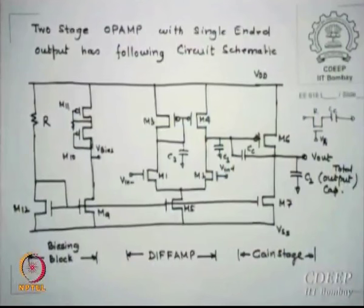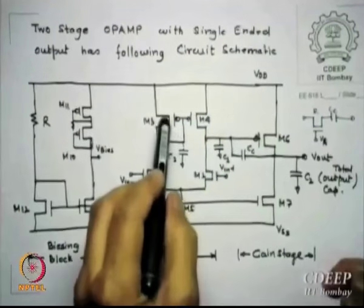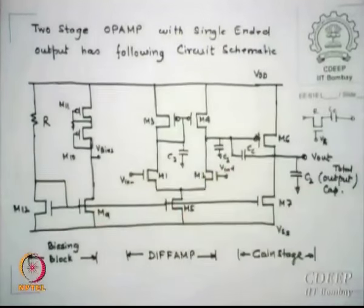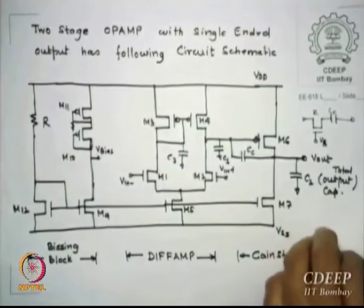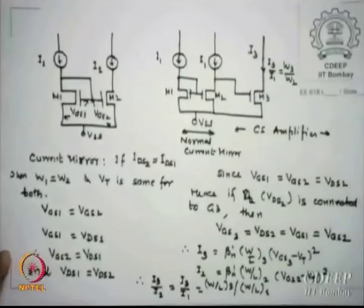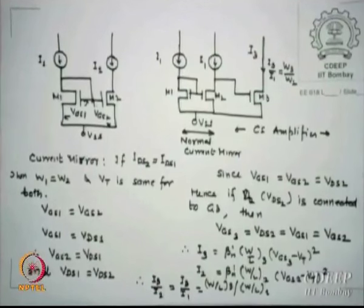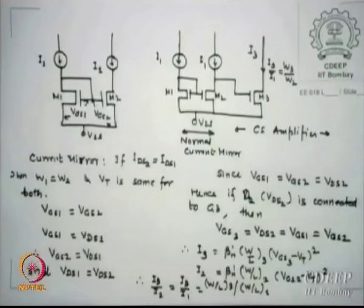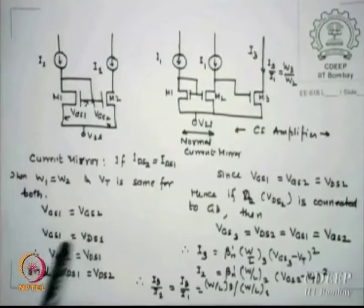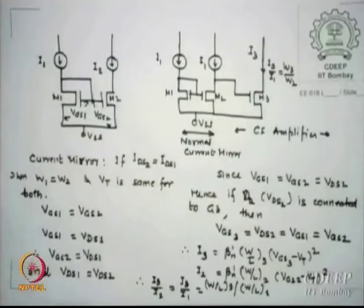Last time this was the circuit we designed, and there was a query about VGS3 = VGS4 = VGS6. For a normal mirror with W/L equal, VGS1 = VGS2, and since it is mirrored, VGS1 is also VDS1. Therefore VDS2 is also VGS2.